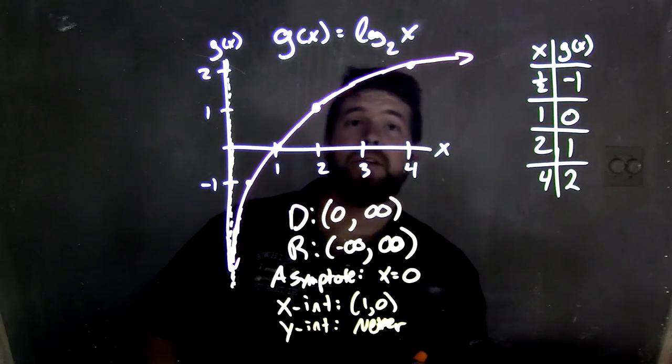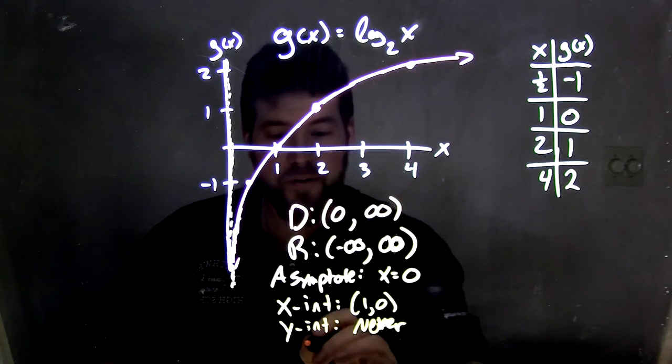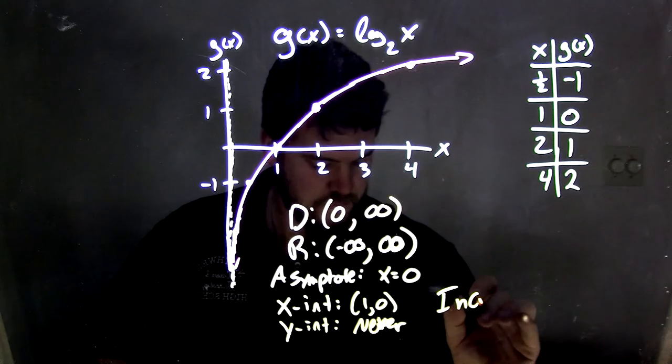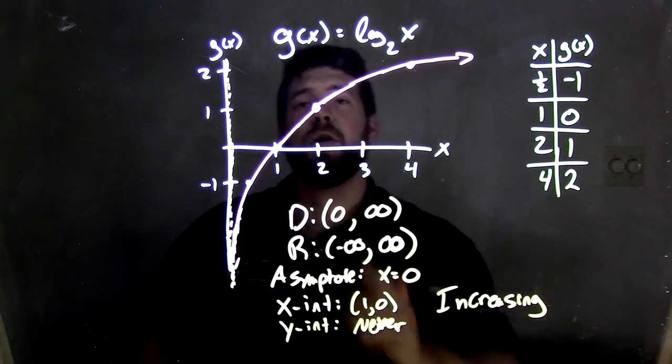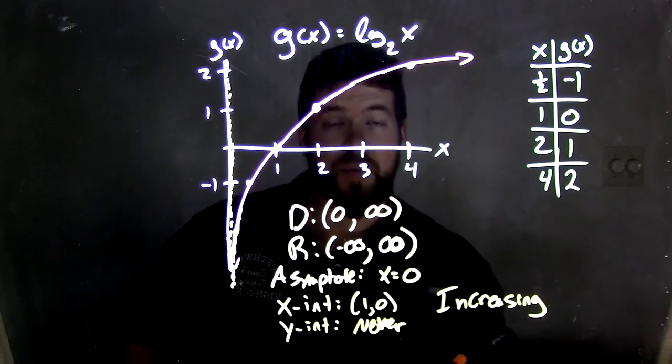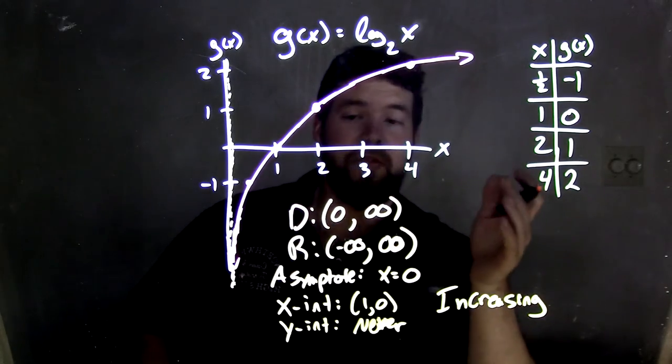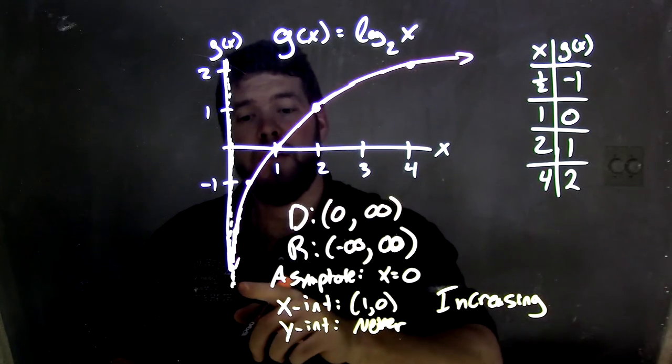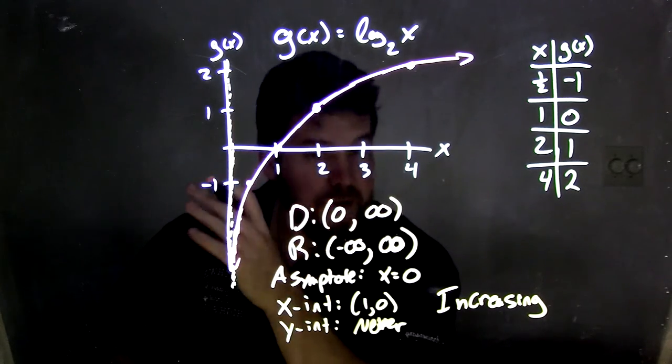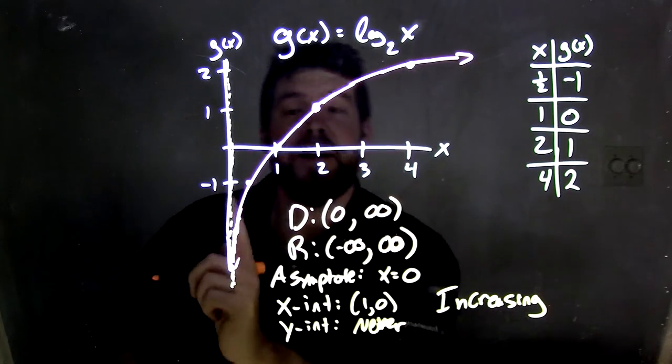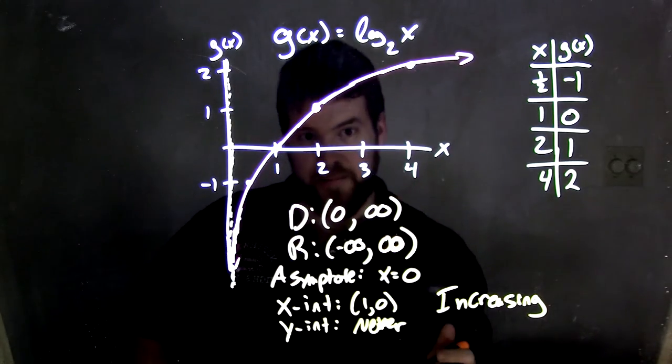Is this function increasing, decreasing? It is actually always increasing. So here again, we're graphing the log base 2 of x. We start with just a table, and we see that our function starts when x is zero, but not really at zero, not including zero, all the way to positive infinity, and it's always increasing.